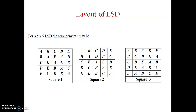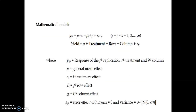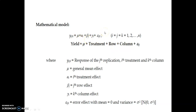We will see the mathematical model or linear model of the Latin square design. The model is: y_ijk equals mu plus alpha_i plus beta_j plus gamma_k plus error, where y_ijk is the response of the jth replication, ith treatment, and kth column. Mu is the general mean, alpha_i is the ith treatment effect, beta_j is the jth row effect, and gamma_k is the kth column effect. We have three particular things to focus on: treatment, row, and column — giving us three hypotheses, one for treatment, one for rows, and one for columns.